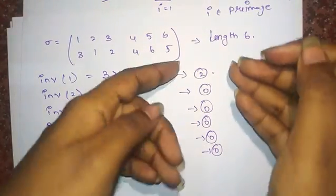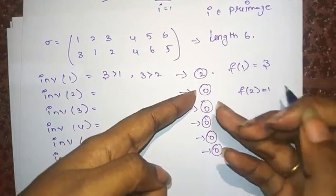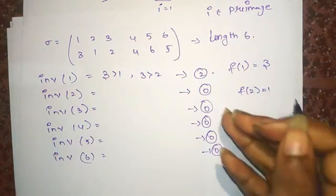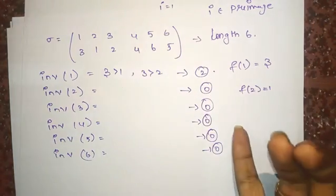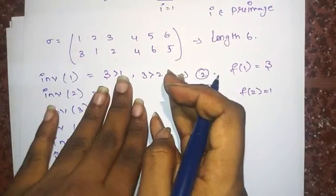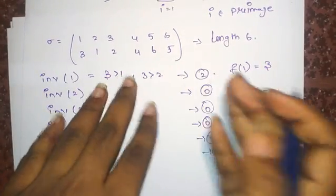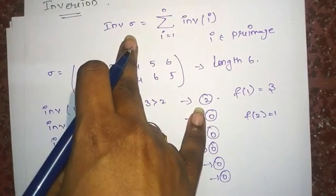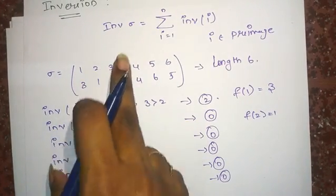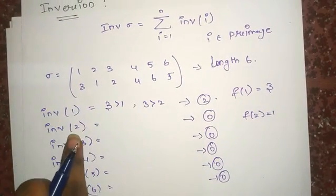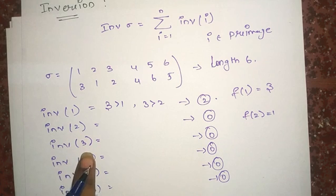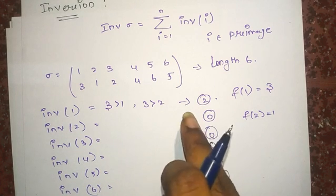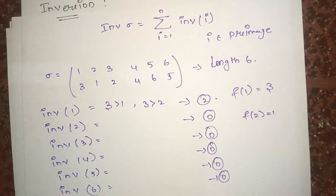So we add all inversions together. The inversion of sigma equals inversion(1) + inversion(2) + ... + inversion(6), which is 2 + 0 + 0 + 0 + 0 + 0. Therefore, the inversion of sigma is equal to 2.